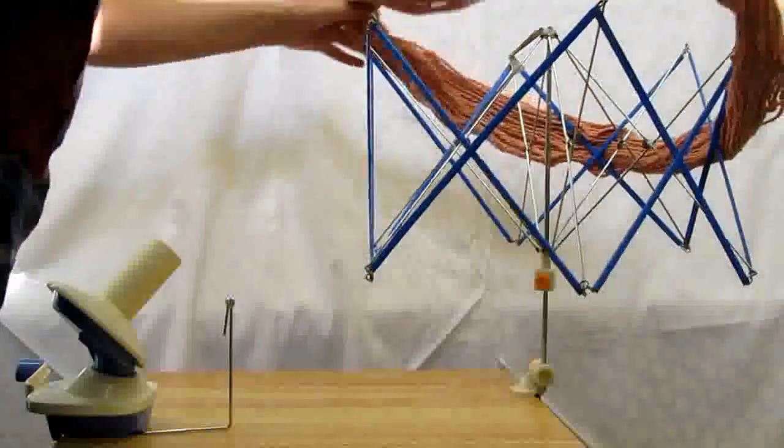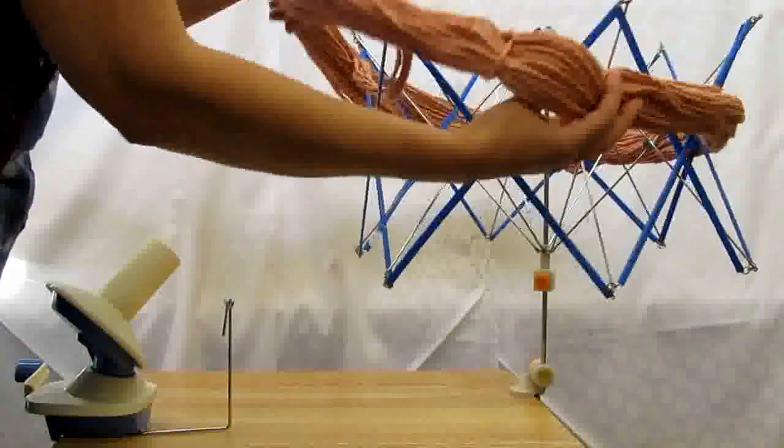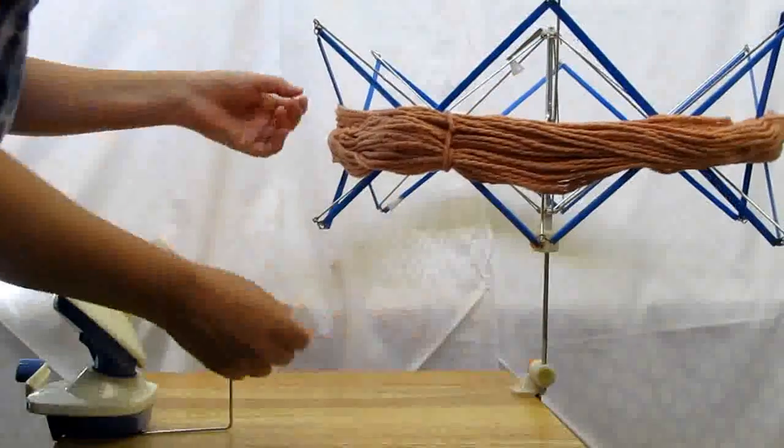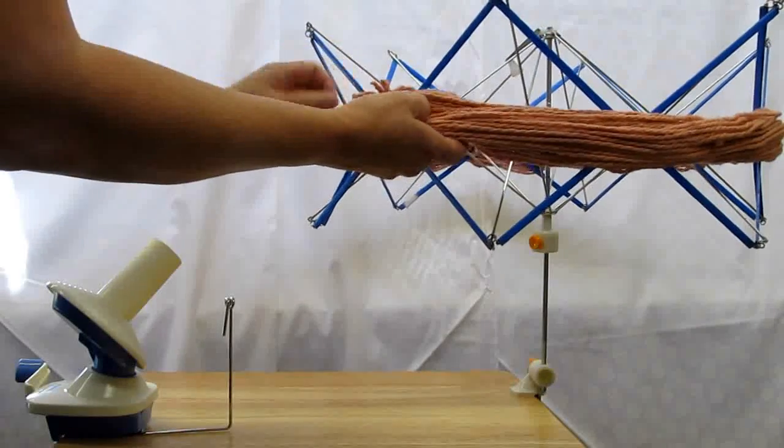You put it over the swift, which opens and closes like an umbrella. I clamp mine to a TV tray. That's just the easiest way for me. You might have a good table at home that works.